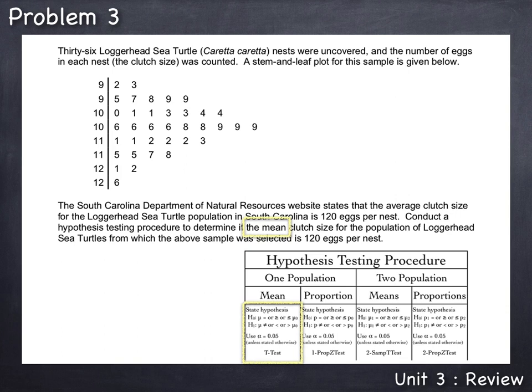The first step in any hypothesis test procedure is to statistically state the hypotheses. We do this by writing down the H0 and the H1, followed by the symbol for the population parameter involved, which is the mean, μ. Now we must determine if this test is involving an equal versus not equal, or is it a greater than equal, less than test, or it could be a less than or equal, greater than test. We always look to the words of the question to figure that one out. Here the test is to determine if the mean clutch size for this population of loggerhead sea turtles is 120 eggs per nest. Is is an equals, and equals always goes in H0, the null hypothesis.